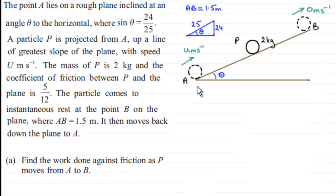What we're given is that the point A lies on a rough plane inclined at an angle theta to the horizontal, where sine theta equals 24/25ths. And I've sketched a triangle here just to illustrate that ratio. We'll come back to that later on.